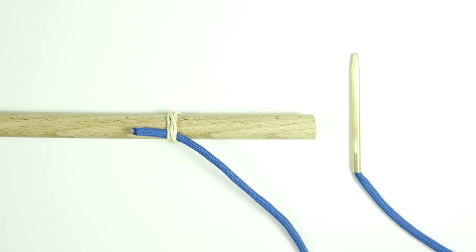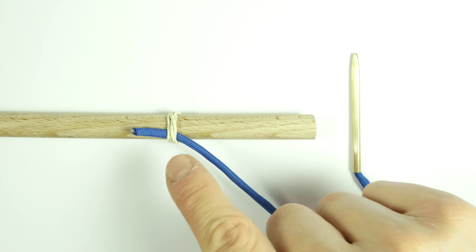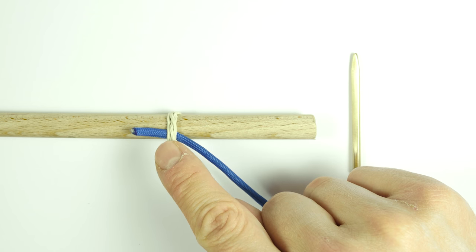To start tying, attach your lacing needle onto one end of your paracord. Tuck the other end under the rubber band.